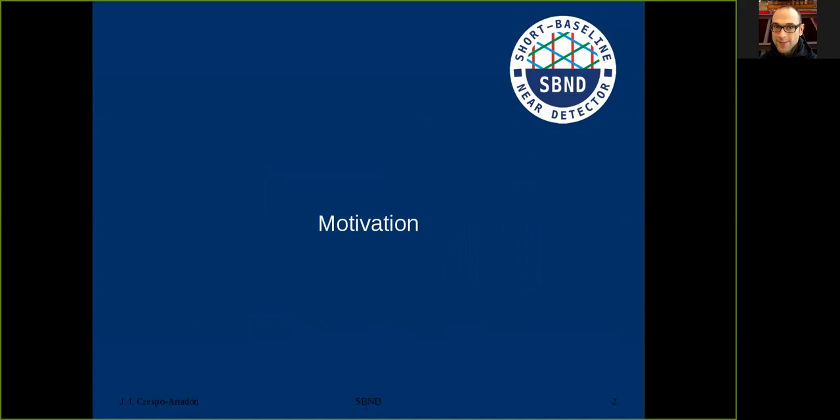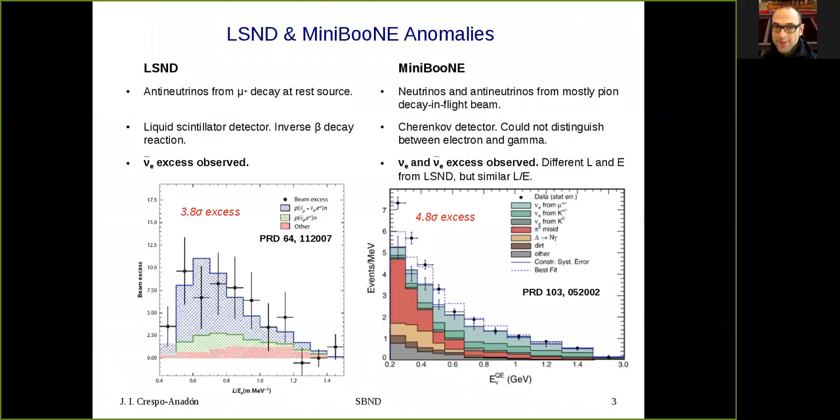Let me first motivate this experiment by telling you about two previous experiments, LSND and MiniBooNE, that both produced anomalies. LSND used antineutrinos from a positive pion decay at rest source. It was a liquid scintillator detector that used the inverse beta decay reaction to detect the electron antineutrinos, and it observed a 3.8 sigma excess. You can see here in the plot the black data points representing the experimental data and the expectation which corresponds to the sum of the red and green histograms. In order to fit the data it's necessary to add an additional contribution shown in blue, which represents the anomalous transition between muon antineutrinos and electron antineutrinos.